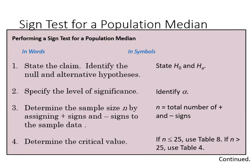These are the steps for the sign test. We first state our claim in terms of a null and alternative hypothesis. We identify our alpha level, and we also need to record our sample size by looking at the plus and minus signs in the sample data.